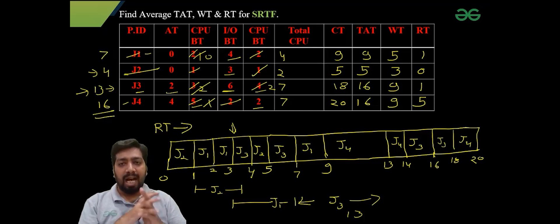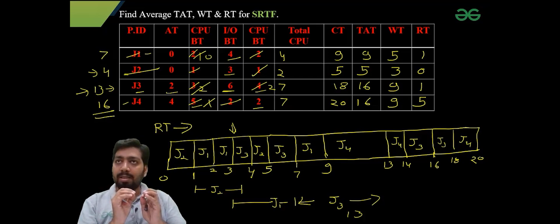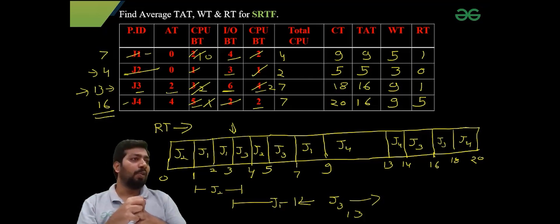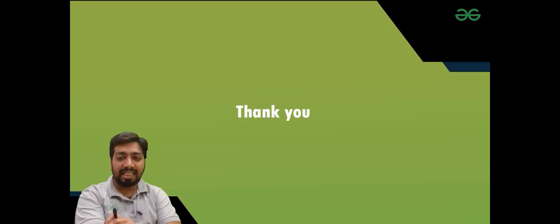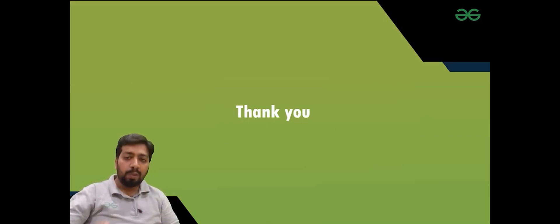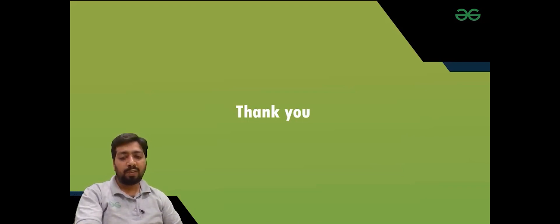You can calculate the average by yourself. It is very unlikely that SRTF with IO burst will be asked in the GATE exam — it has not been asked till now. But it might happen in the future, so you should practice this. Solve one or two more questions based on SRTF with CPU and IO burst mix. If you are able to solve this, you can solve any question based on CPU scheduling algorithms. That's all for this video, thank you.